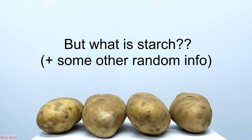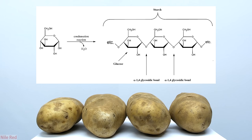The polymer of starch is made up of many glucose units connected by glycosidic bonds. In starch, the type of glycosidic bonding that occurs is almost completely alpha-1-4, where the alpha refers to the orientation of the bond, and the 1-4 refers to the specific glucose carbons that are involved in the bond.